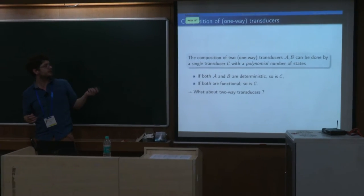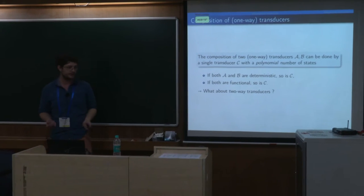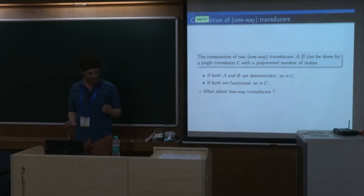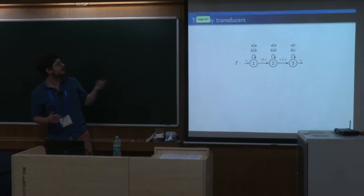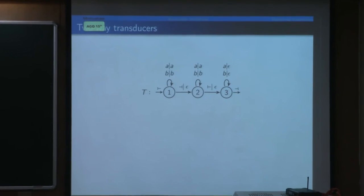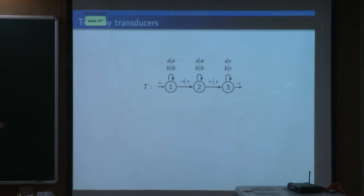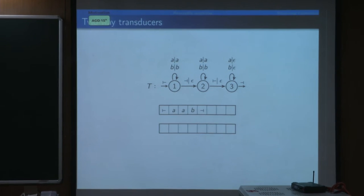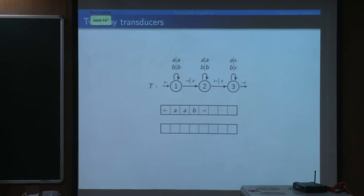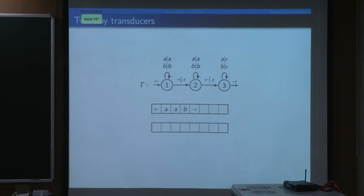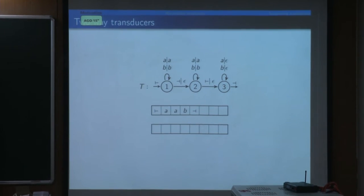The question we ask is: what about two-way transducers? First I'll define what I mean, which is slightly different from Gabriele's. Similarly, you have transducers that read letters and produce outputs. There are specific letters for the end markers of your input words, because you allow your reading head to move left and right, and you need to stay within the bounds of your word — these are necessary evils.